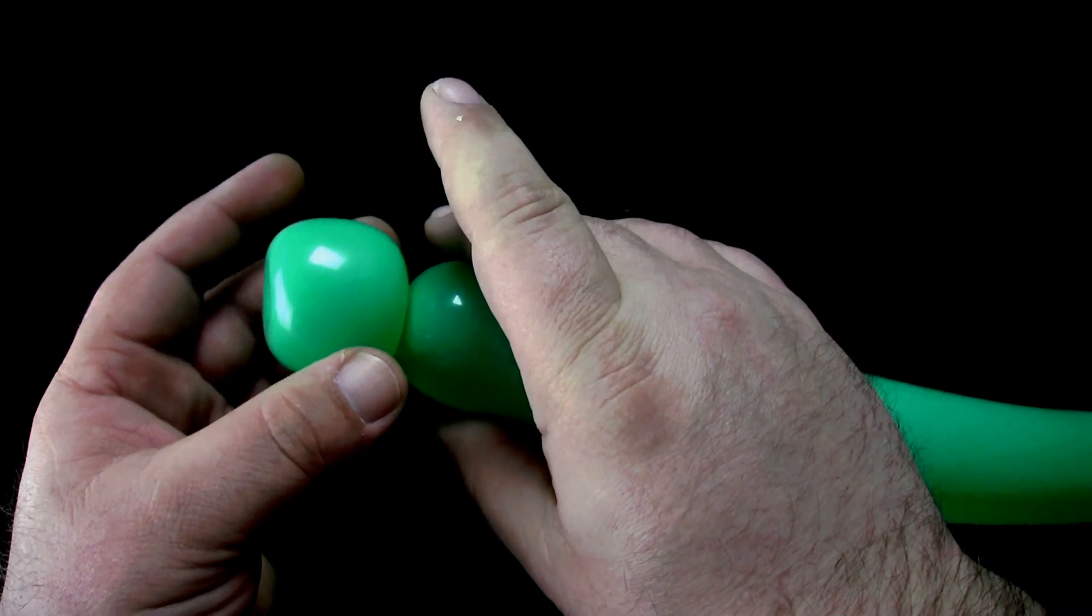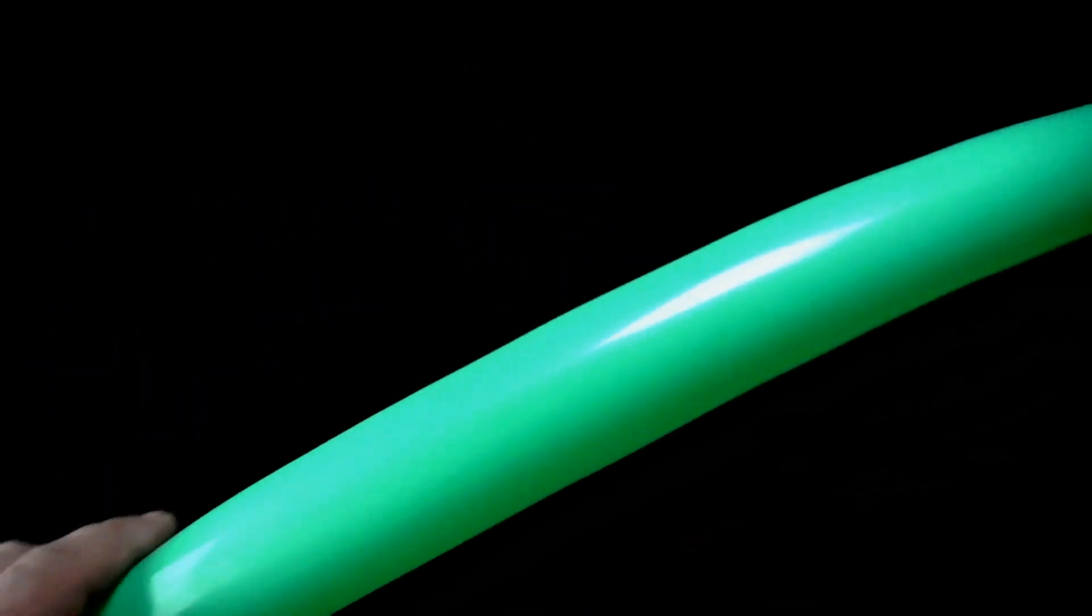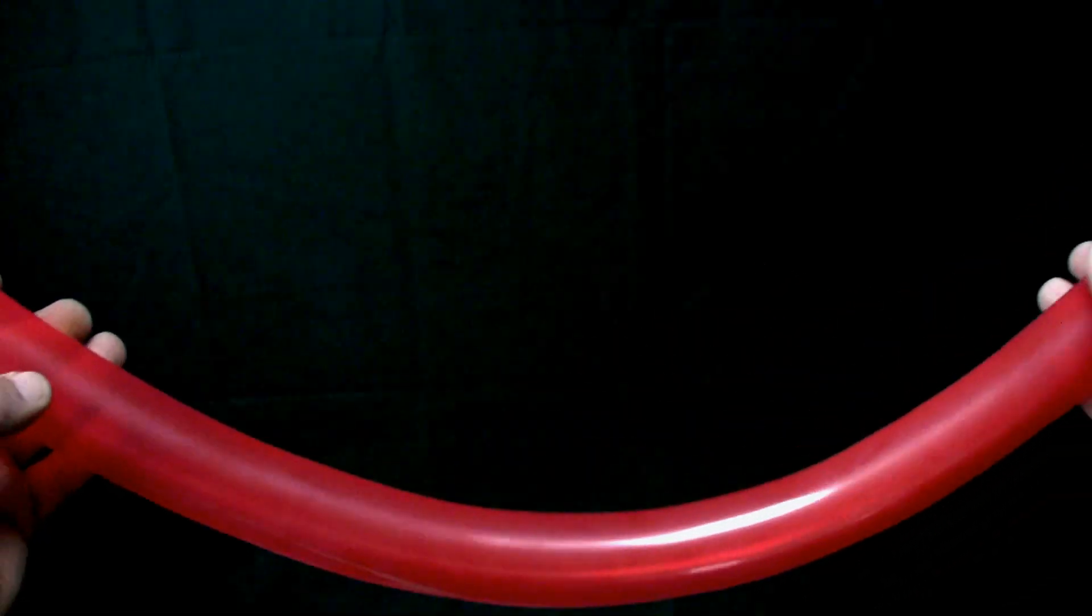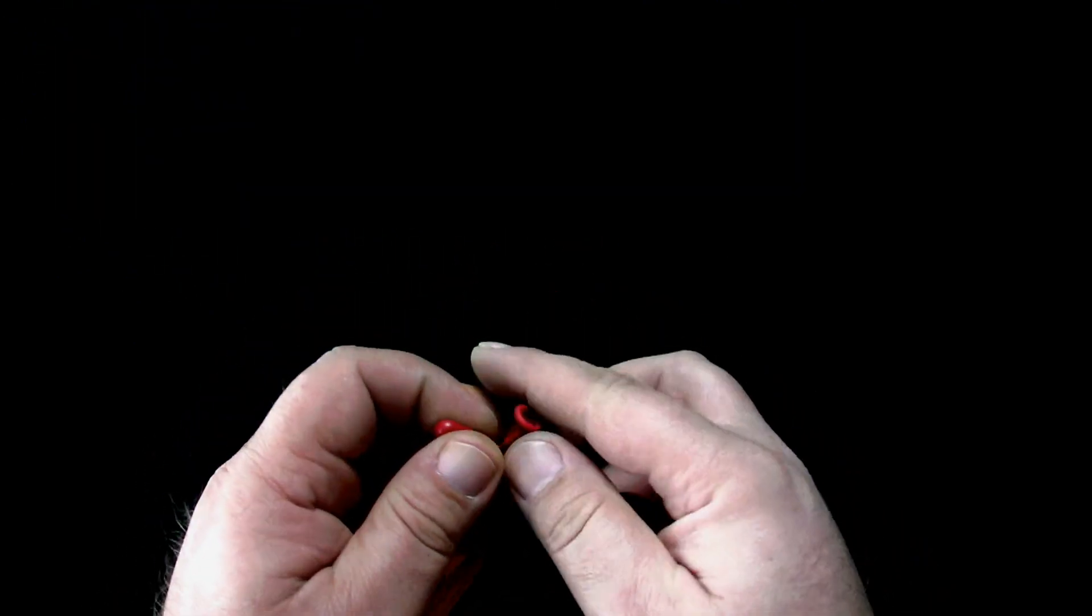Set this balloon aside for now. Now, to work on the balloon you will use for the petals. Tie the nozzle and the uninflated portion of the balloon together.